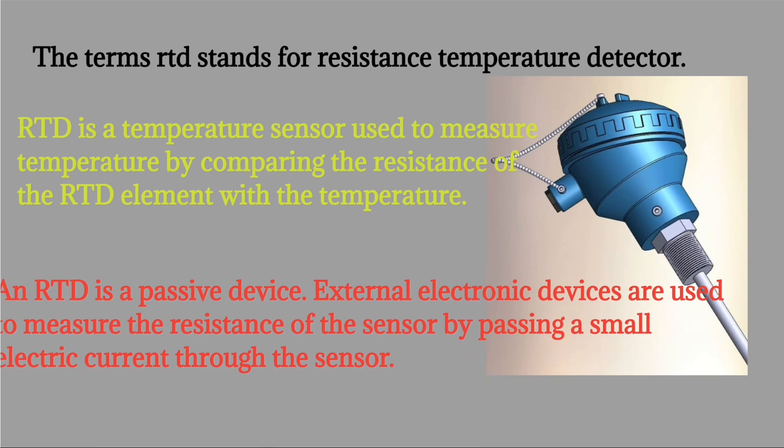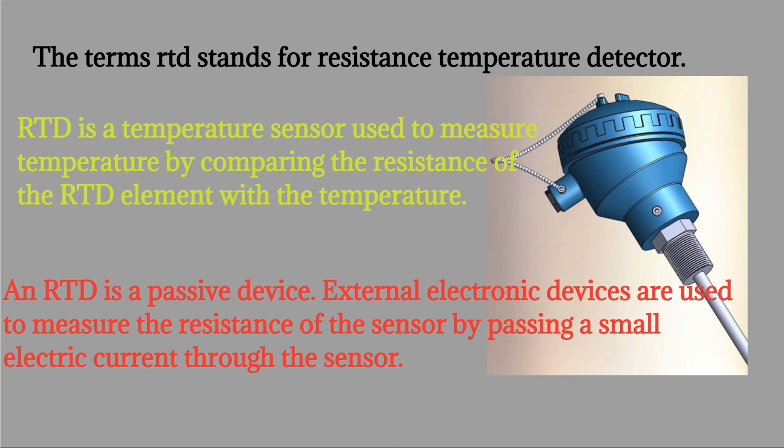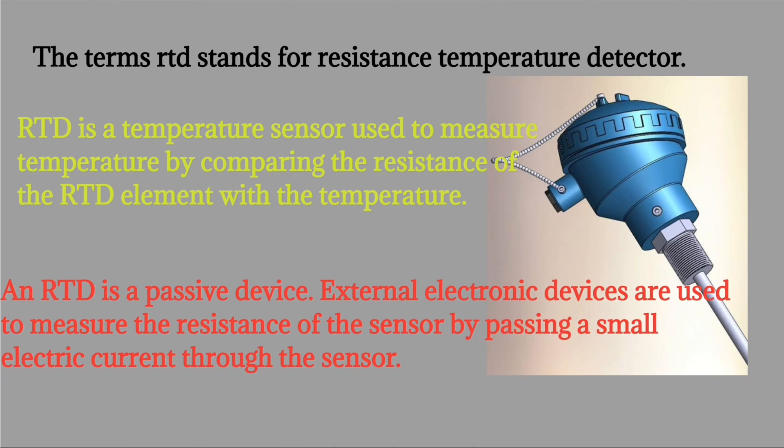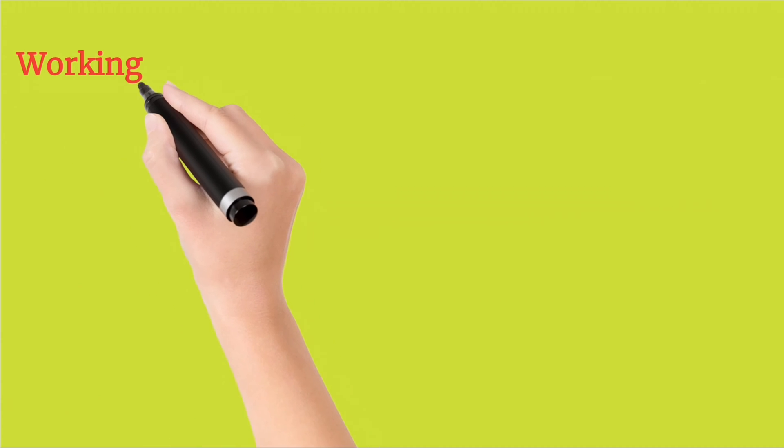External electronic devices are used to measure the resistance of the sensor by passing a small electric current through the sensor.